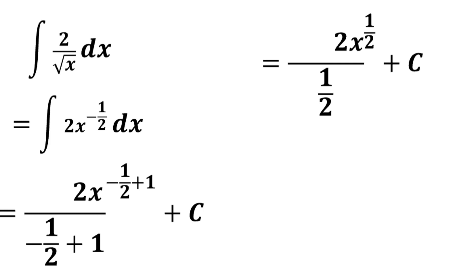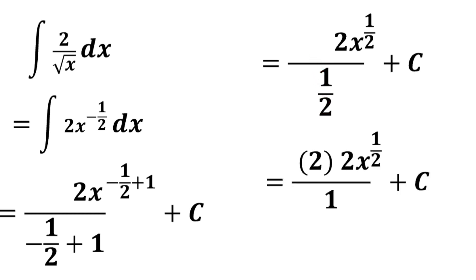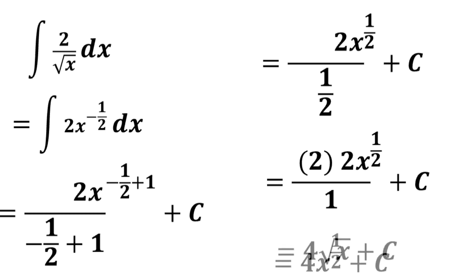Invert the divisor and proceed to multiplication. So we have 2 times 2x to the power 1 half plus c, and 2 times 2 is equal to 4. So this is equal to 4x to the power 1 half. x to the power 1 half is the same as the square root of x, so the final answer is 4 times the square root of x plus c.